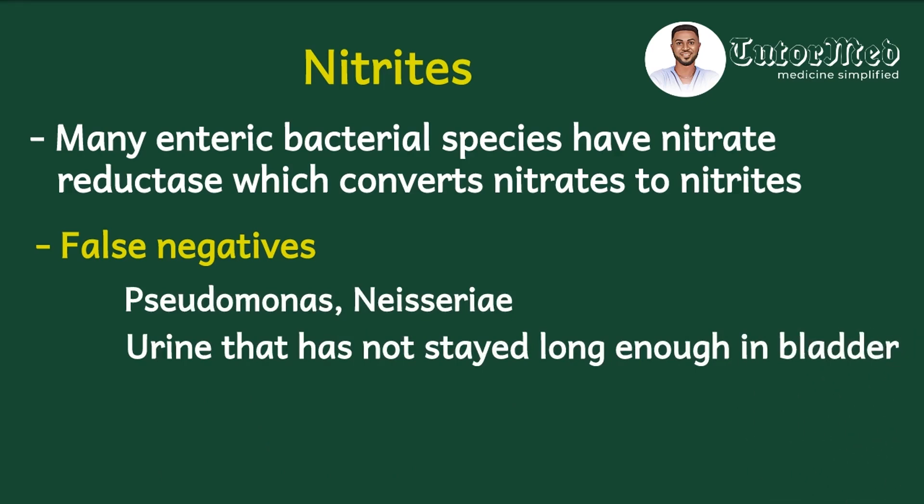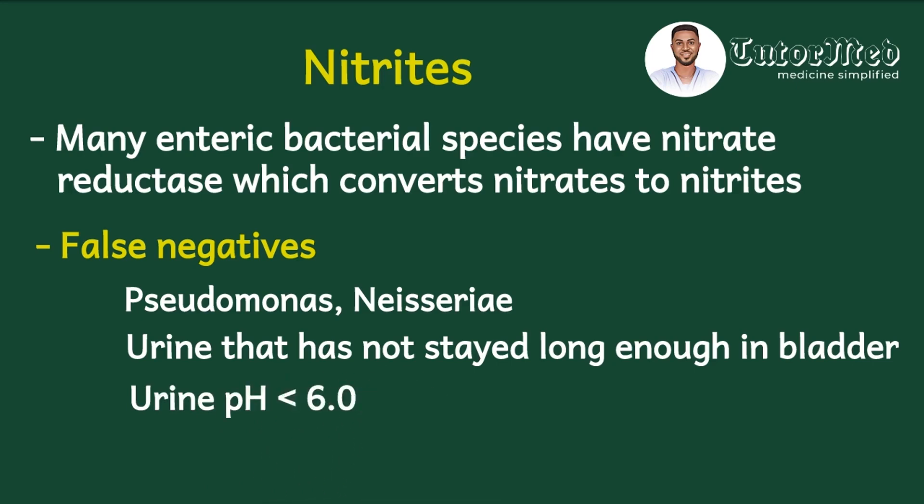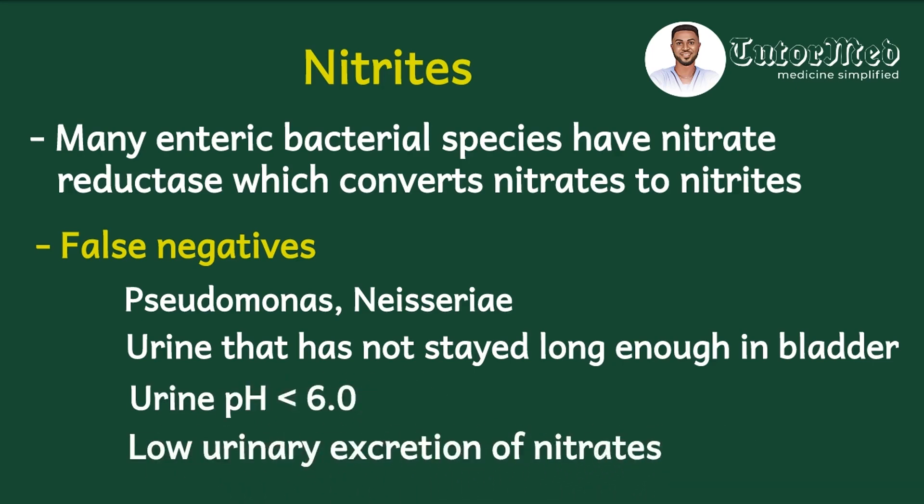Other false negative causes include urine which has not stayed in the bladder long enough — less than four hours. Literature says the nitrite might be falsely negative in that case. A urine pH less than six and low urinary excretion of nitrates are also causes — if there are no nitrates in the urine, even E. coli cannot convert them. Together with leukocyte esterase, nitrites indicate a UTI, but in a Pseudomonas UTI, leukocyte esterase may be positive while nitrites are negative.